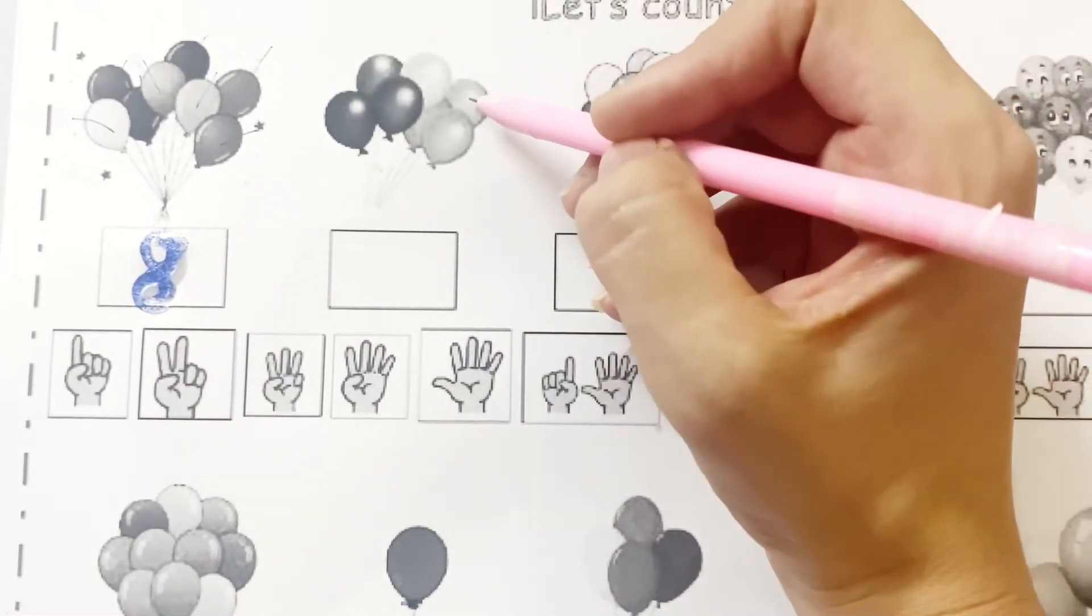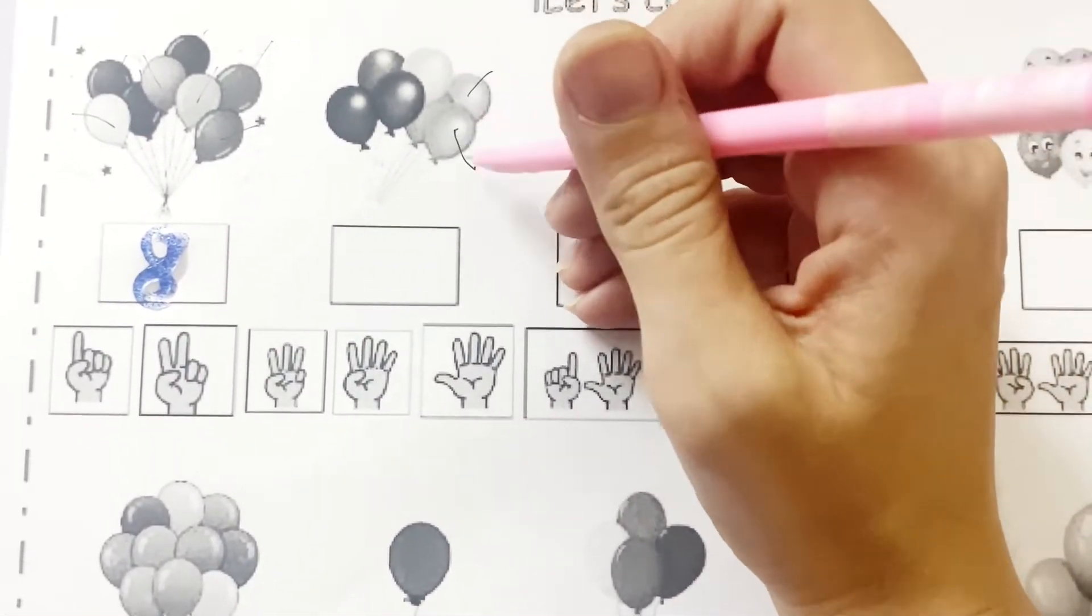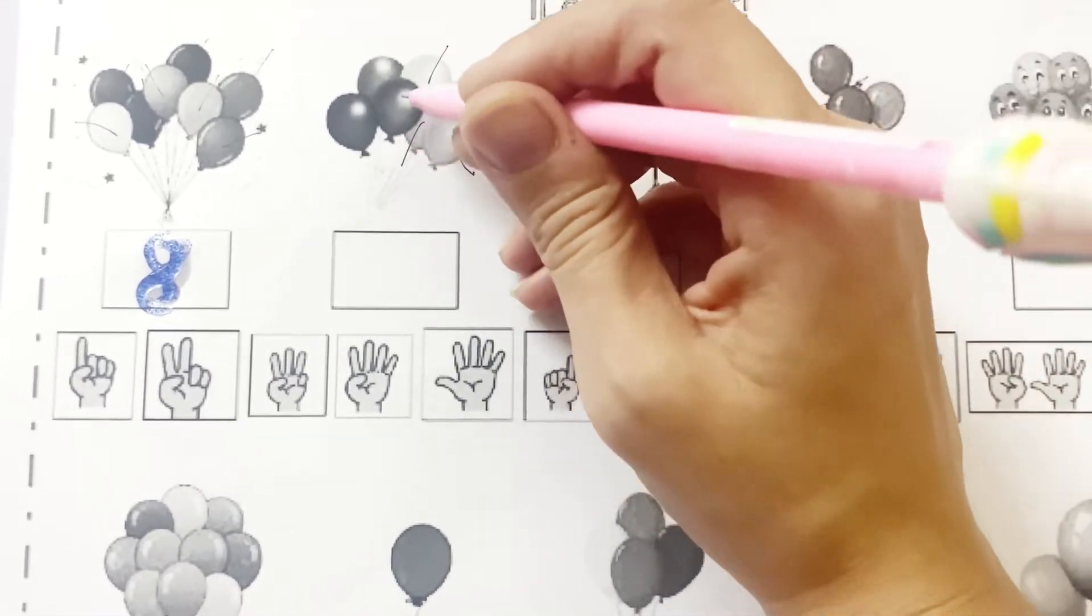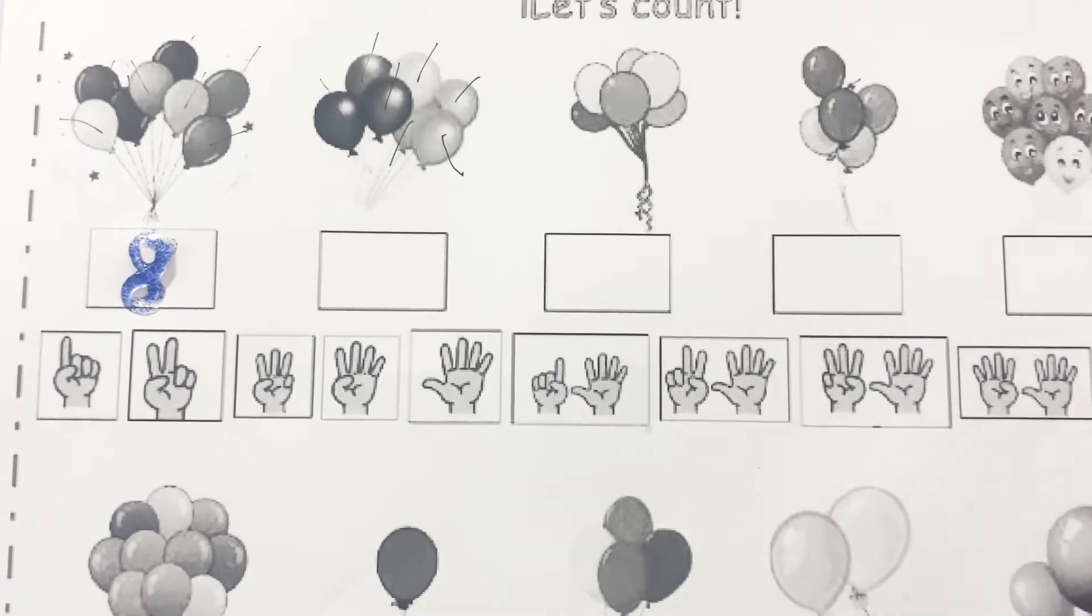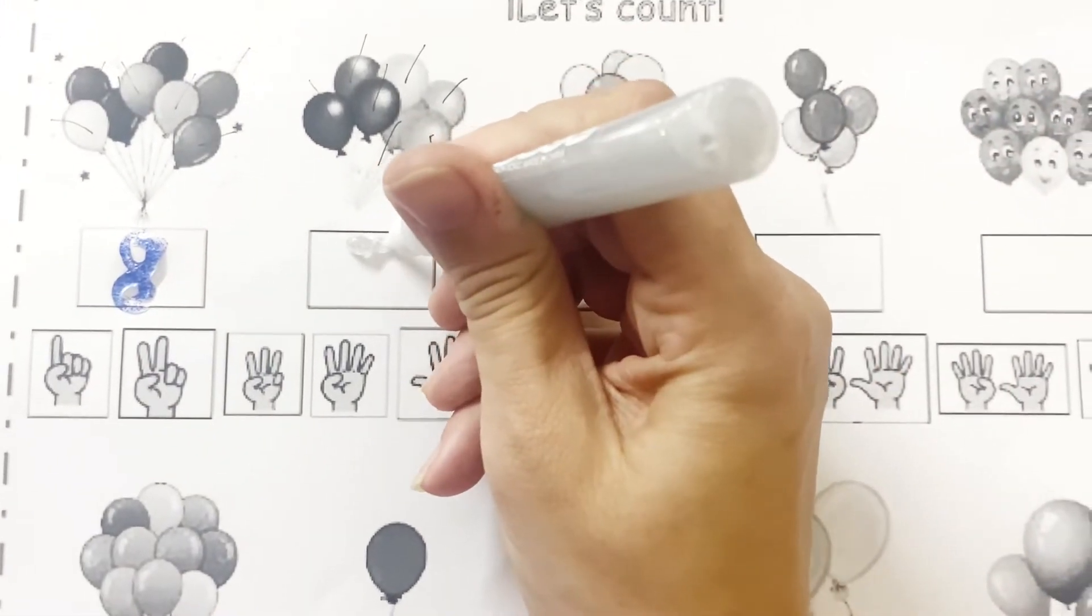Now let's count these. 1, 2, 3, 4, 5, 6 and 7. Seven.